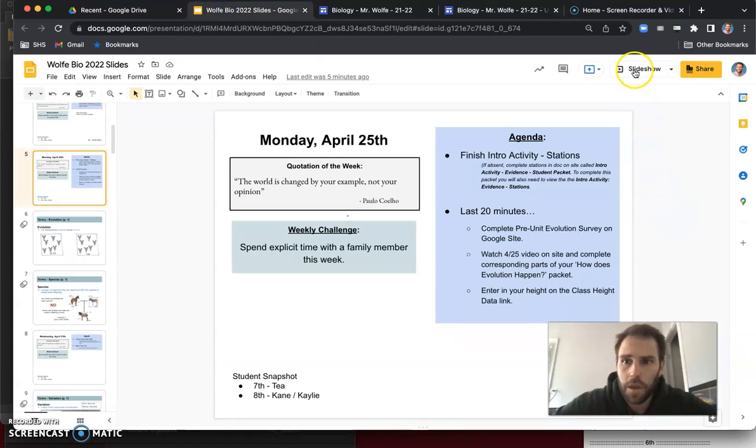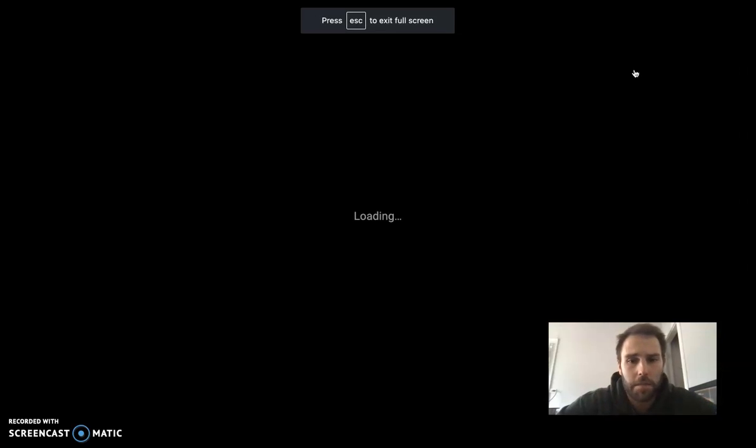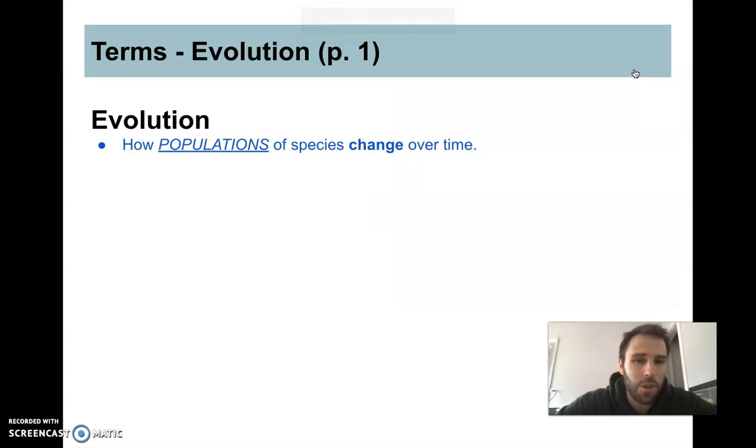Alright, so let's start off with what is evolution. So there's a bunch of boxes on page one. We're actually only gonna complete two today. So when we talk about evolution, in the broadest sense evolution is just merely change. Evolution is specifically how populations of species change over time.